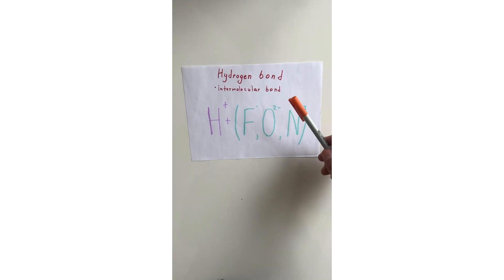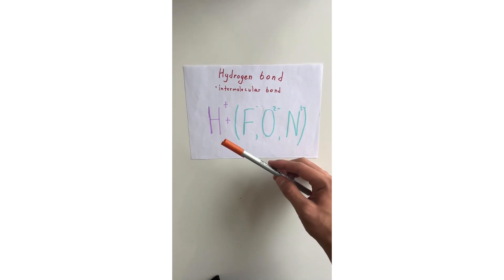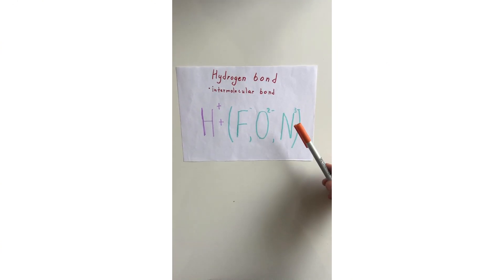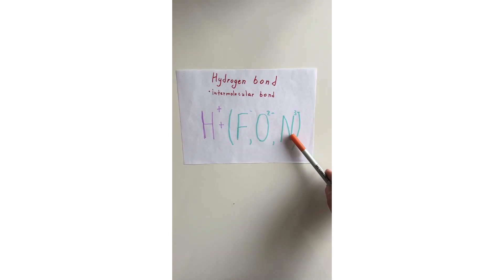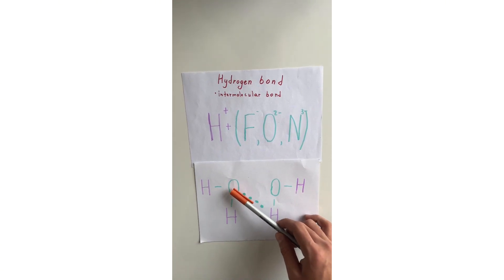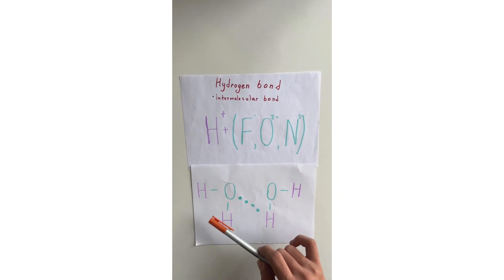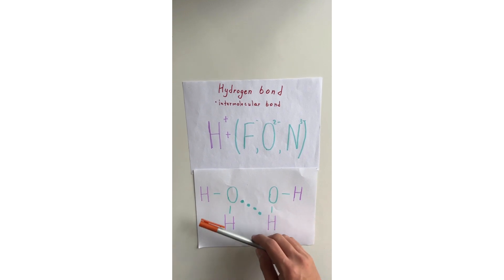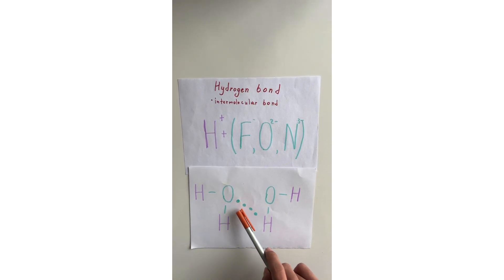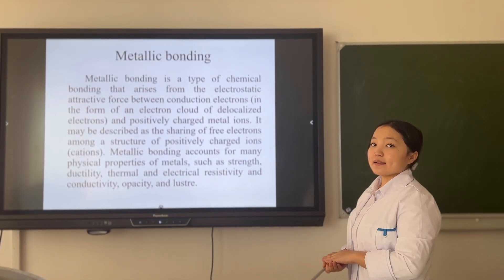Hydrogen bonding is an intermolecular bond where the partially positive hydrogen of one molecule is drawn towards the partially negative non-metal of another molecule — fluorine, oxygen, or nitrogen. For example, between hydrogen and oxygen inside the water molecule, a covalent polar bond is formed. Between the oxygen of one molecule and the hydrogen of another molecule, a hydrogen bond is formed because it is an intermolecular bond.